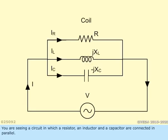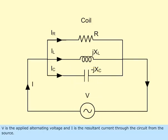You are seeing a circuit in which a resistor, an inductor, and a capacitor are connected in parallel. V is the applied alternating voltage and I is the resultant current through the circuit from the source.